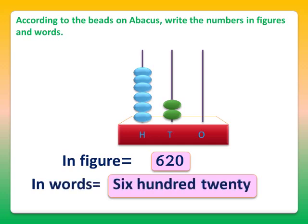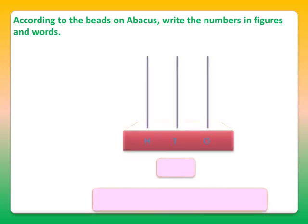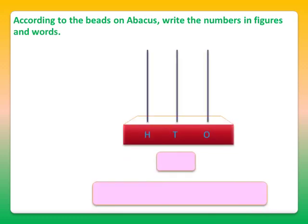Let's take one more example. On the given abacus, let's count the beads in the ones stick. It's 1, 2, 3, 4, 5, 6, 7, 8, and 9 beads. So 9 beads are there in the ones stick, meaning 9 ones.